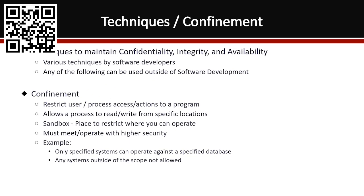You must meet and operate with higher security when dealing with confinement — because you're putting everything in this bucket and tightening the entry and exit points. A good example is only specified systems can operate against a specified database. You can see this within AWS: you allow the routing to talk only to a specific database to dump or retrieve data. The moment you allow anyone to connect to that database, you lose control.